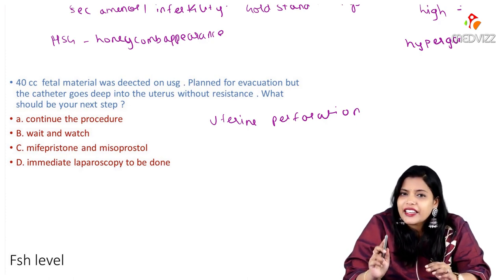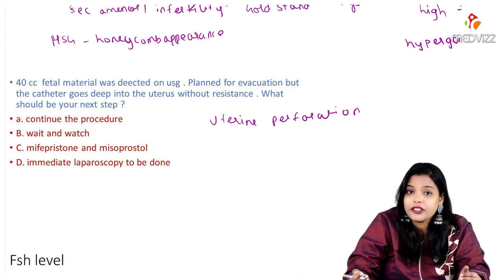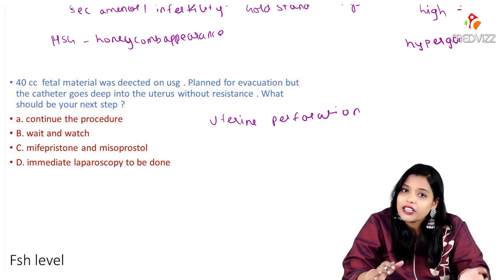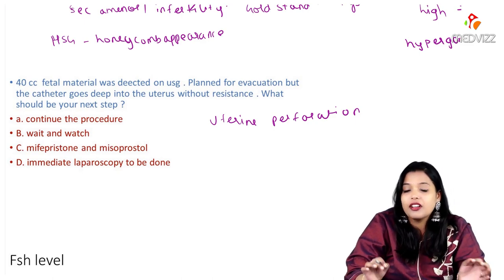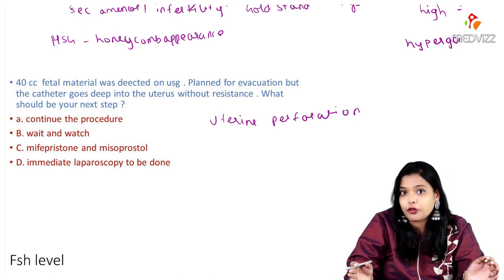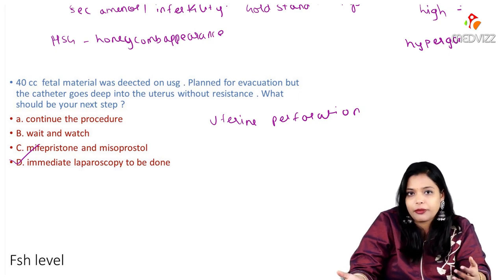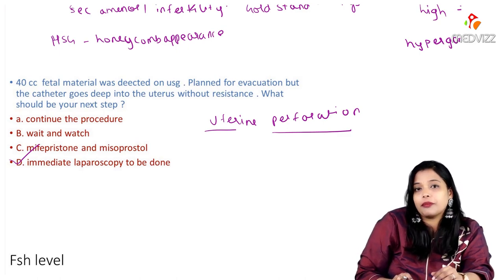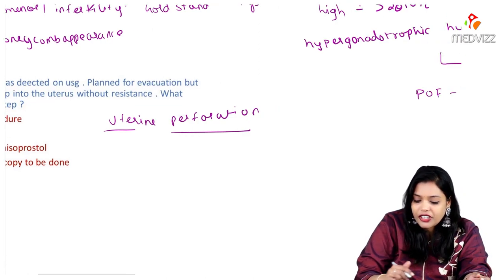Because of the risk of hemoperitoneum, further management should be immediate laparoscopy. If the patient is hemodynamically unstable, you have to go for laparotomy — never do laparoscopy in a hemodynamically unstable patient. Here, since we have the option of laparoscopy, we go with laparoscopy. This is a case of uterine perforation.